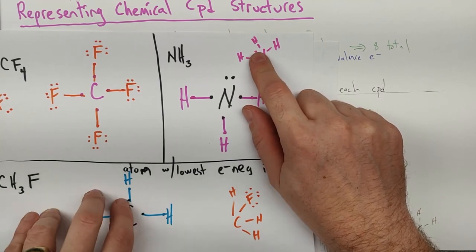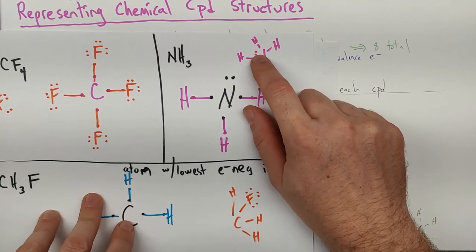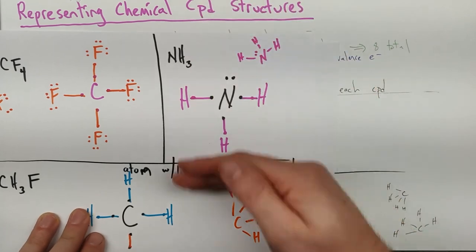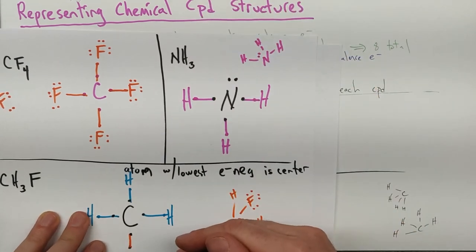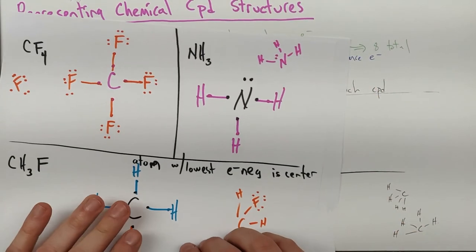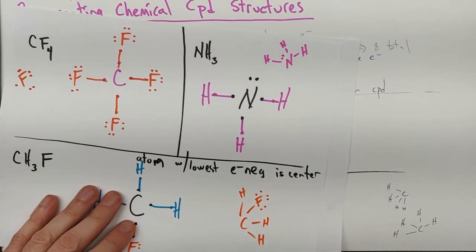Those are all pretty straightforward examples. In the next video, I want to look at some transition examples involving multiple bonds, and then we'll see where things go from there.